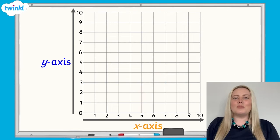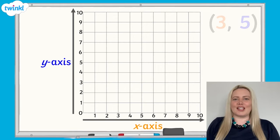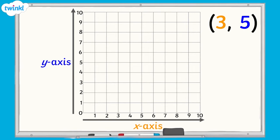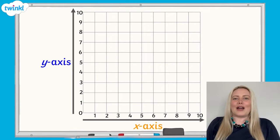Where would we plot the coordinates 3, 5 on the grid? We need to find 3 on the x-axis first, and then 5 on the y-axis. Then we can mark the point with a dot to show its position on the grid.